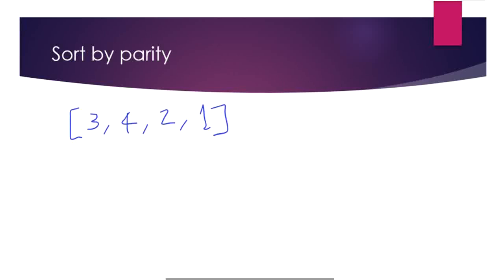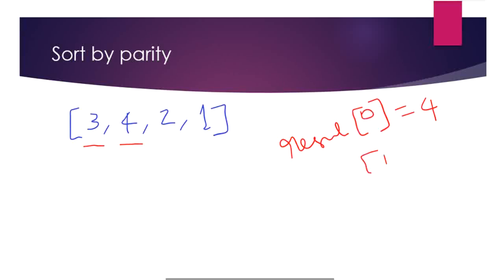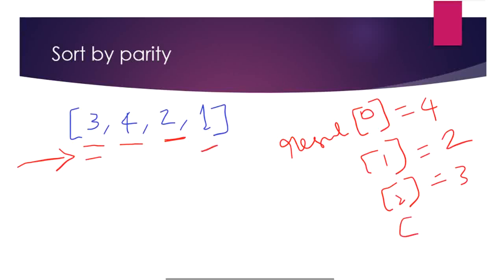If we try to solve this using a brute force method, we'll have one extra external result array. We start by saving all the even numbers first — iterating the given array, skipping odd numbers, and collecting even numbers. Once all even numbers are traversed, we iterate again to collect the odd numbers. This approach takes extra space for the result array and requires two passes through the given array.